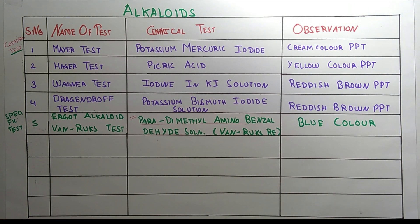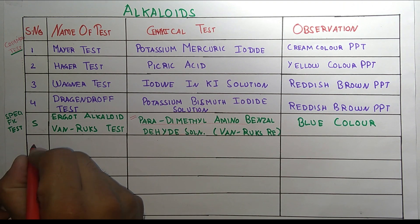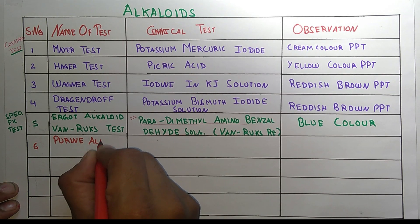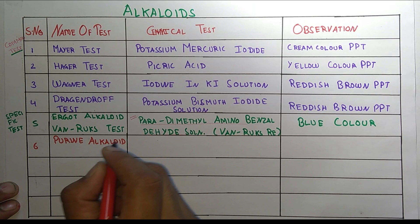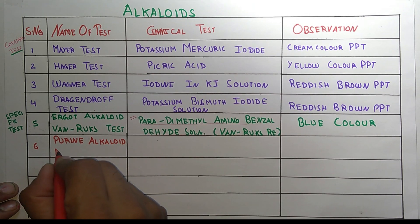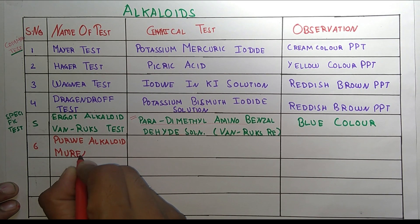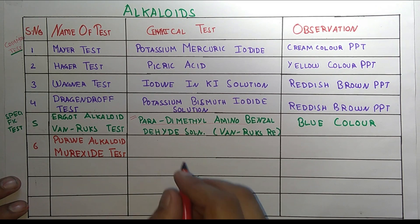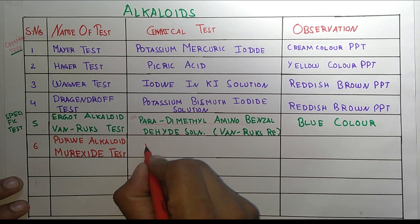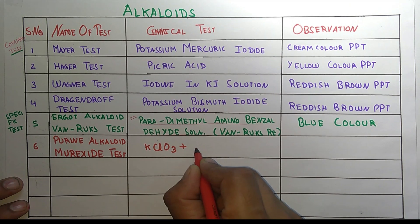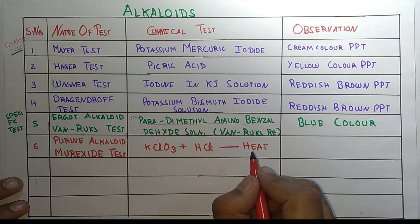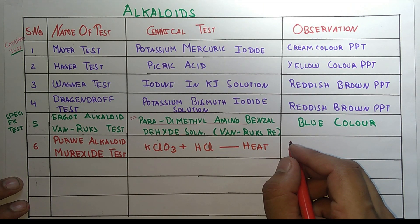The next specific test is for purine alkaloids. The name of this test is the Murexide test. In the Murexide test we use KClO3 plus HCl, then apply heat, and the color observed is purple color.